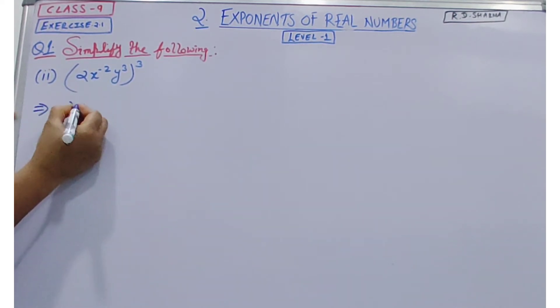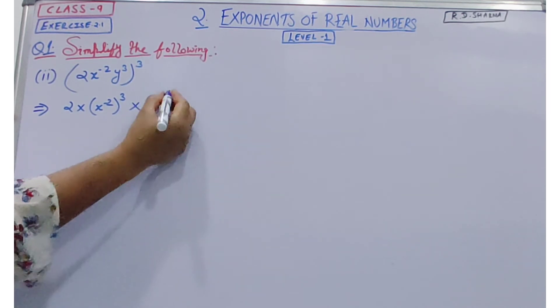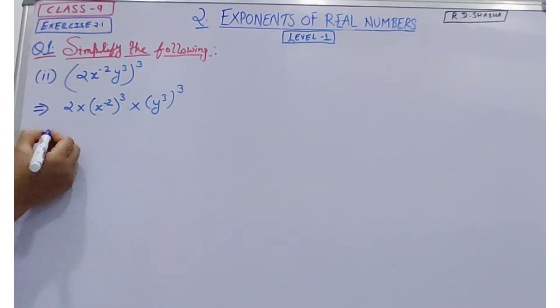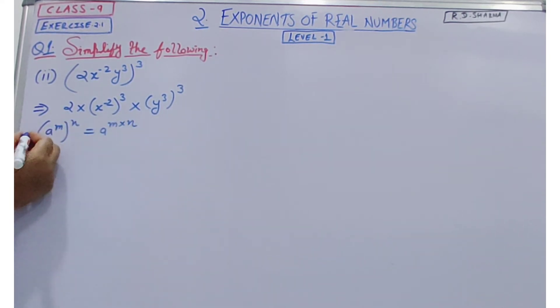This is 2 into x to the power minus 2 to the power 3, then y to the power 3 to the power 3. Now according to our exponent law, a to the power m to the power n is equal to a to the power m into n.